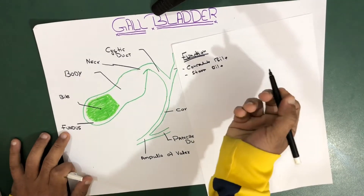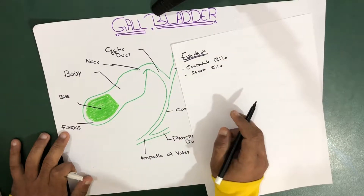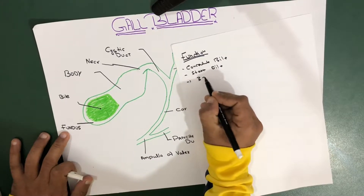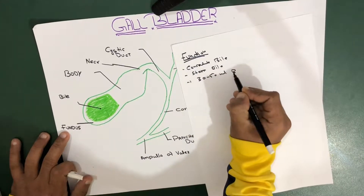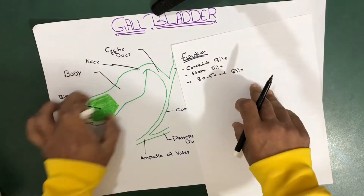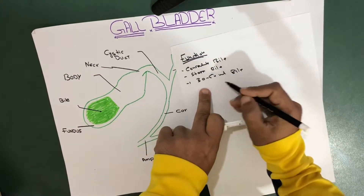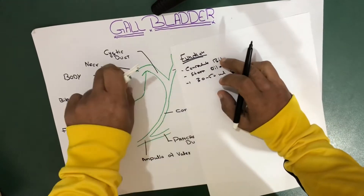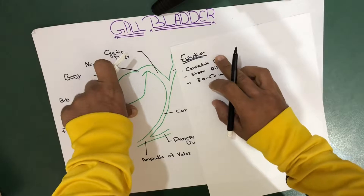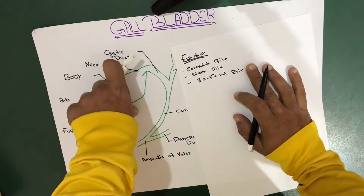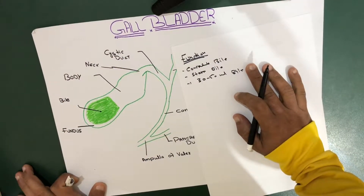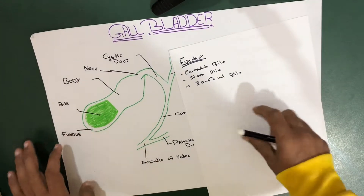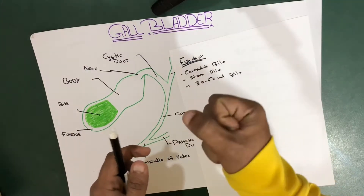The main functions are to store bile and concentrate bile. The gallbladder has the capacity to hold about 30 to 50 milliliters of bile. The gallbladder is regulated by a hormone called cholecystokinin, which helps regulate the gallbladder and release the bile into the second part of the duodenum.